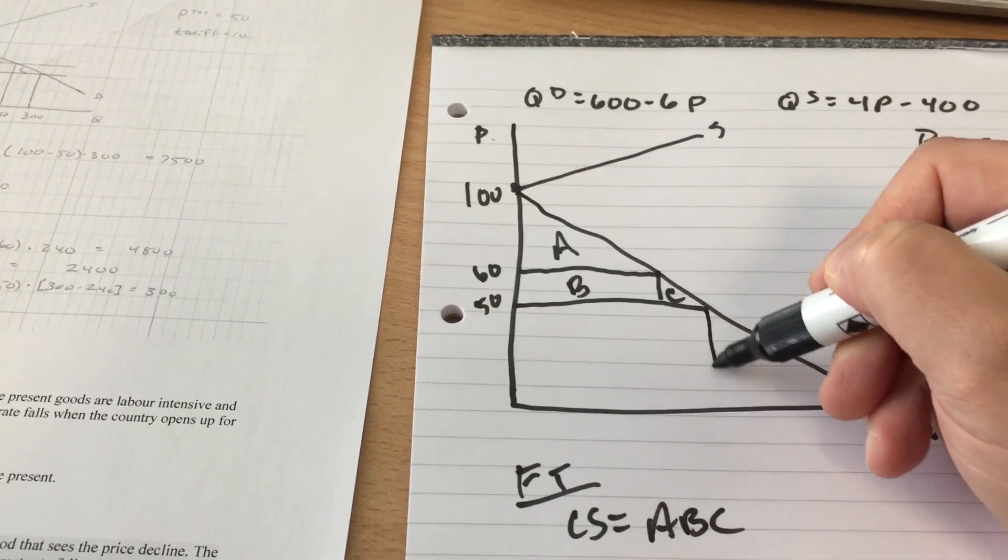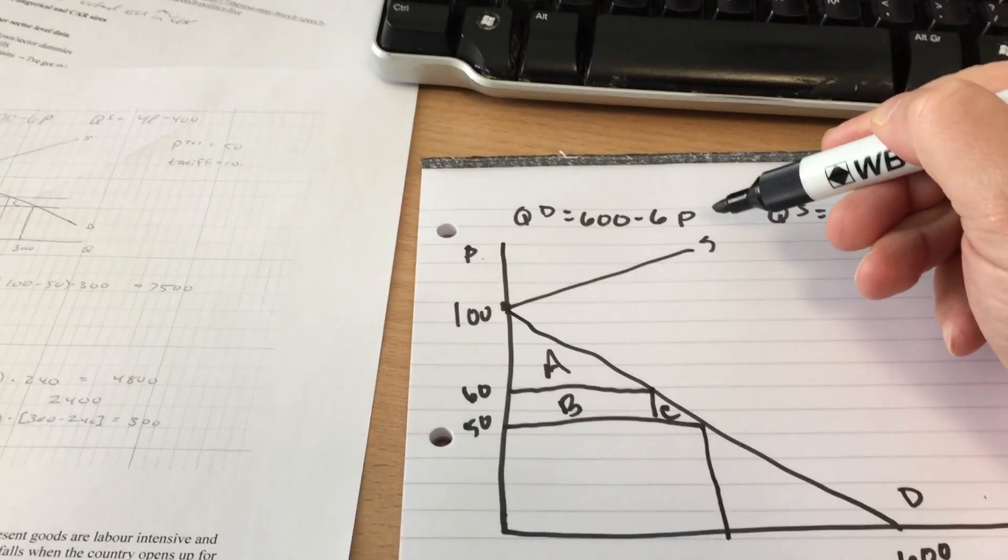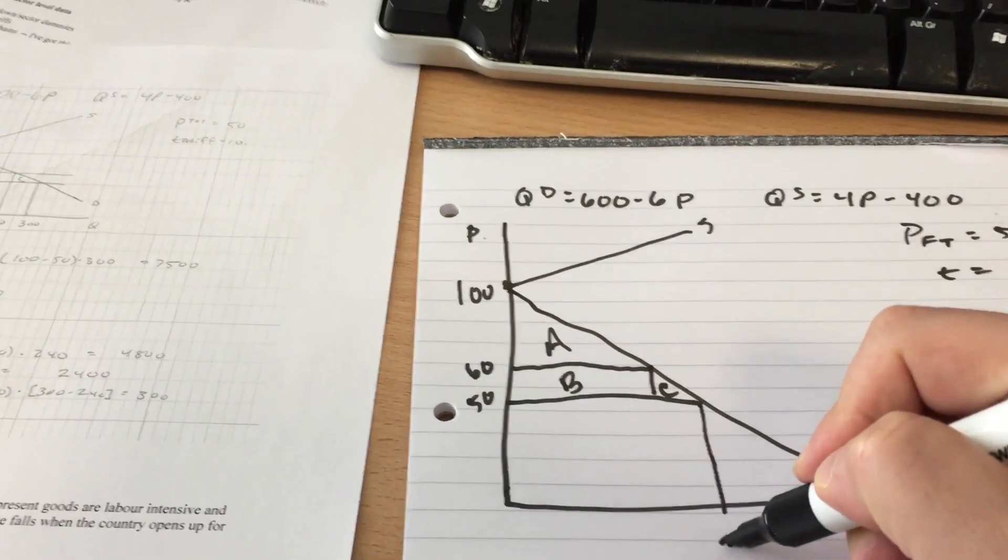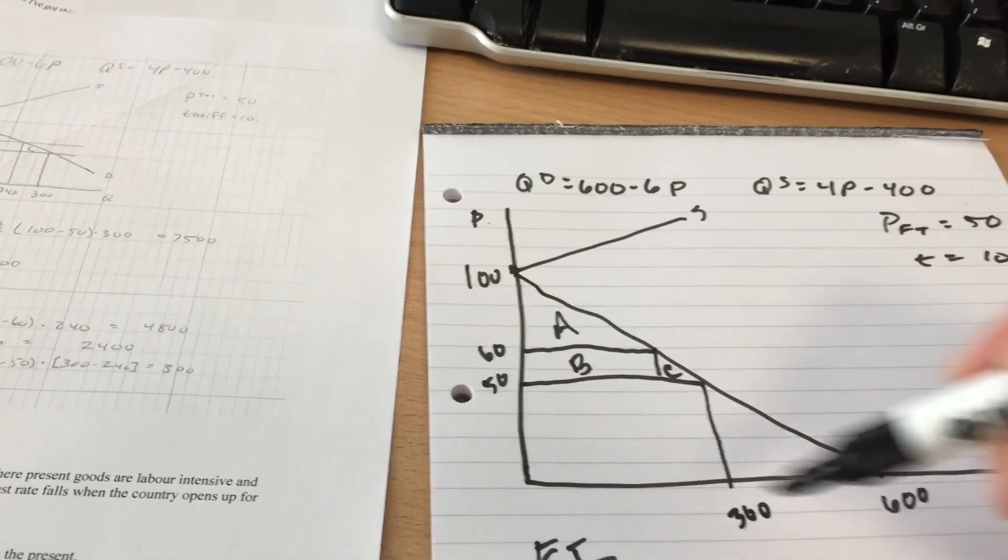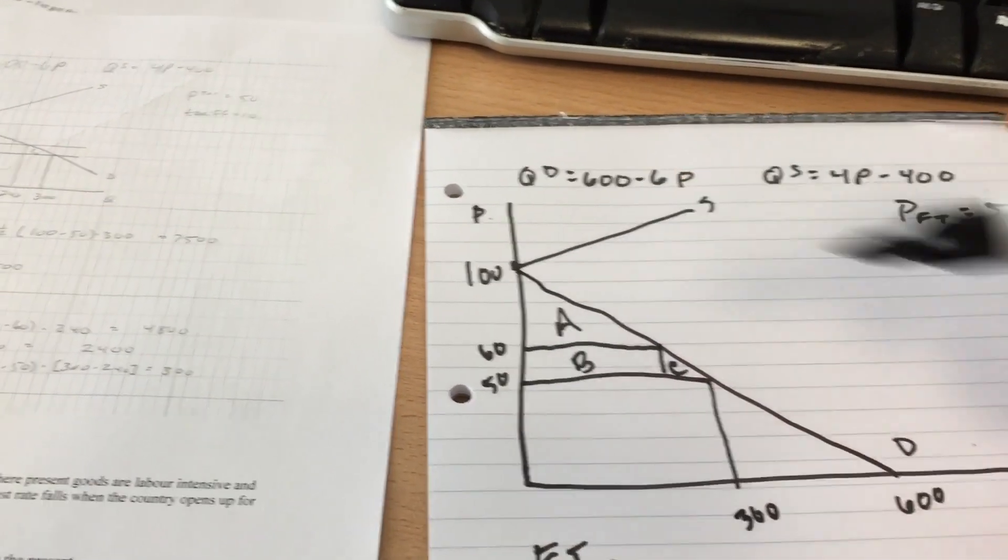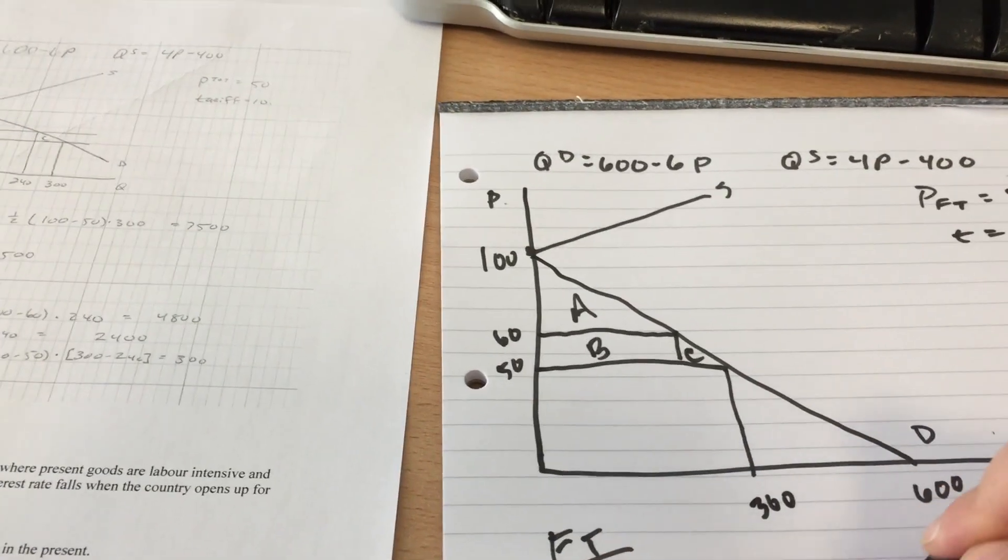So when price is 50, 600 minus 6 times 50 leaves us with 300. So one half of the base, 300 times the height of 50 is a grand total of 7,500.